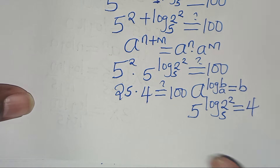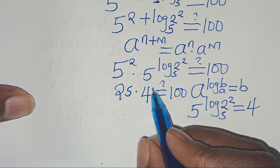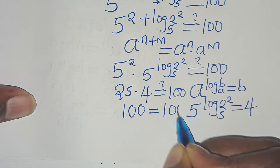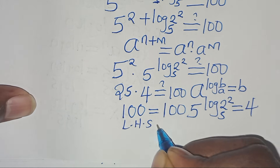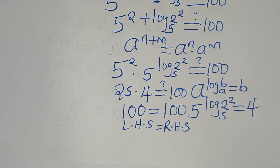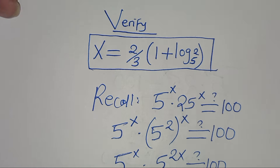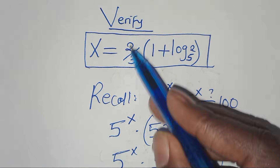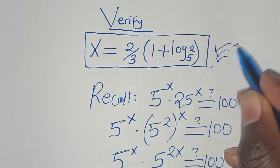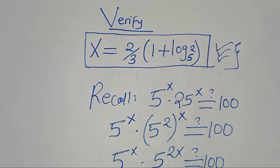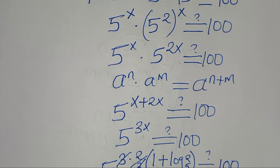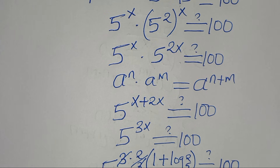Substituting, we have 25 times 4, which equals 100. The left-hand side equals the right-hand side, and this proves that x equals 2 over 3 times the quantity 1 plus log base 5 of 2 actually satisfies the equation. Please follow, like this video, and kindly subscribe. See you in the next video, bye bye for now.